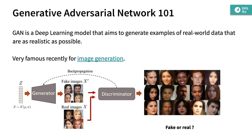You start just generating random data, and then you have a discriminator network that learns to distinguish generated and real data. That's step one — at the beginning, the generator is not trainable.